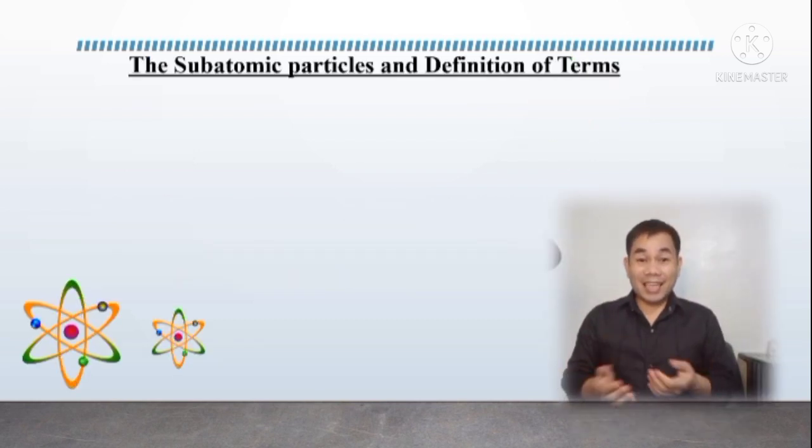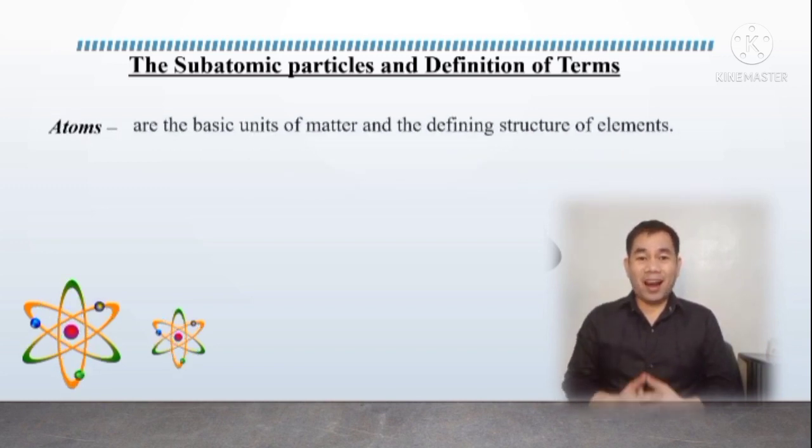Let's discuss first the different subatomic particles and some terms necessary for this topic. Let's start with atoms. Atoms are the basic unit of matter and the defining structure of elements. Atoms are made up of protons, neutrons, and electrons.